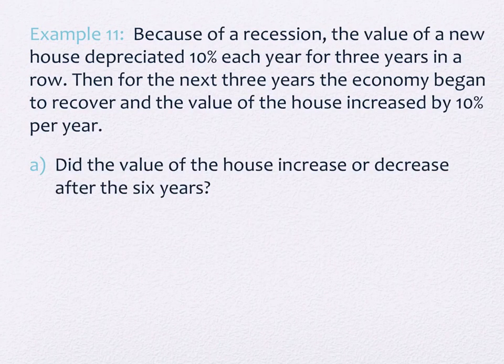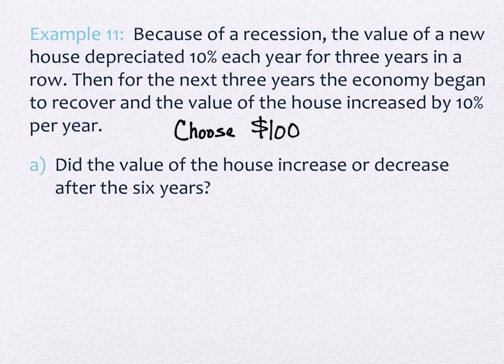Let's look at another one. Again, this is done the same way, but it doesn't have the words interest in it. So because of a recession, the value of a new house depreciated 10% each year for three years in a row. Then for the next three years, the economy began to recover. The value of the house increased by 10% per year. Did the value of the house increase or decrease after the six years? And you might be looking at that and saying, well, it looks like it stayed the same. We're going to calculate to see which one it did because it did not stay the same, albeit it looks like that. The other thing that's interesting about this problem is that, if you'll notice, they don't tell you the value of the house. What that means is that you can pick it because it won't make any difference what you pick. The answer will still be the same regardless. So we're going to choose, and we're going to very nicely choose a $100,000 house because we get to pick, and it won't matter. So I might as well pick something easy to work with.